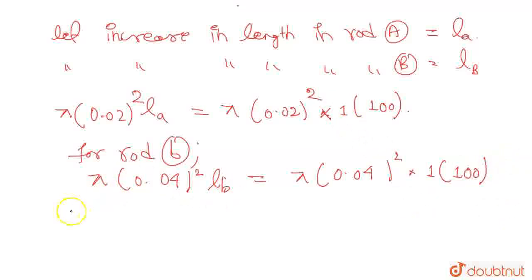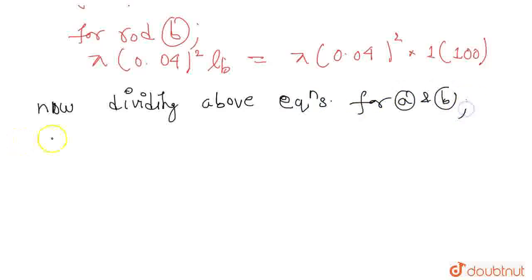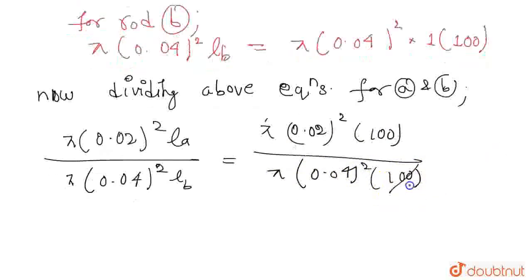Now dividing the top equations for A and B, this will be pi into 0.02 square LA over pi into 0.04 square LB equals pi into 0.02 square into 1 into 100 over pi into 0.04 square into 100.